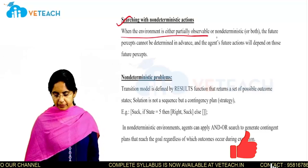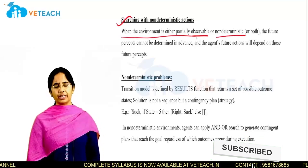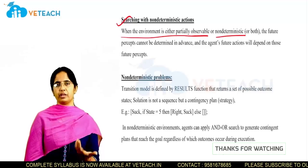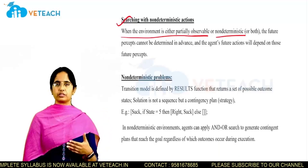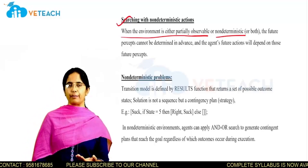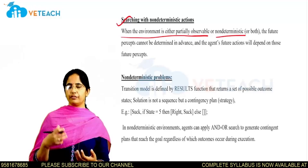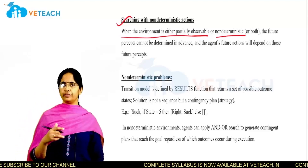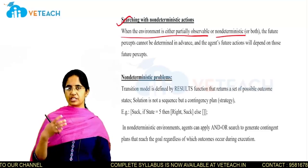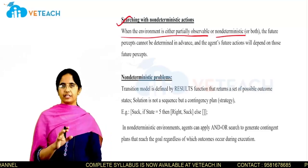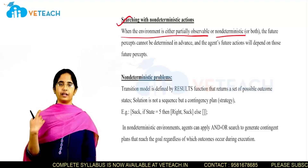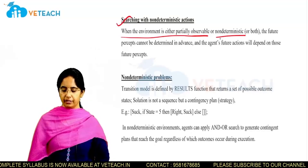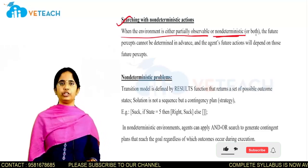When the environment is either partially observable or non-deterministic — partially observable means maybe only the front view is present. For example, with a self-driving car, if you don't put sensors or cameras at the back, when the car is reversing it won't know what objects are present behind it, leading to wrong decisions. That is what is called a partially observable environment.